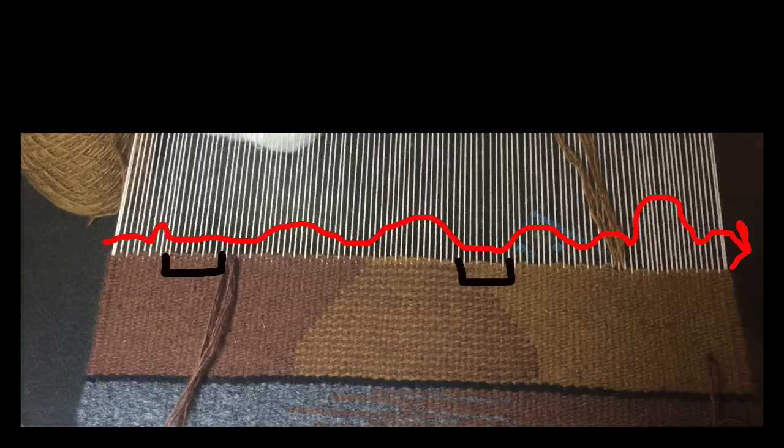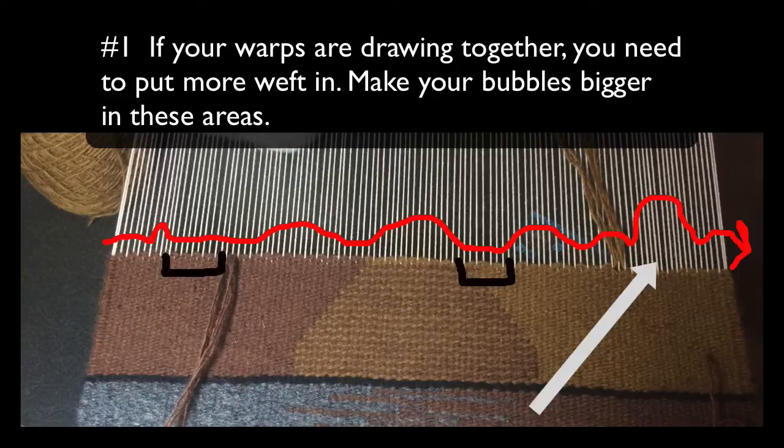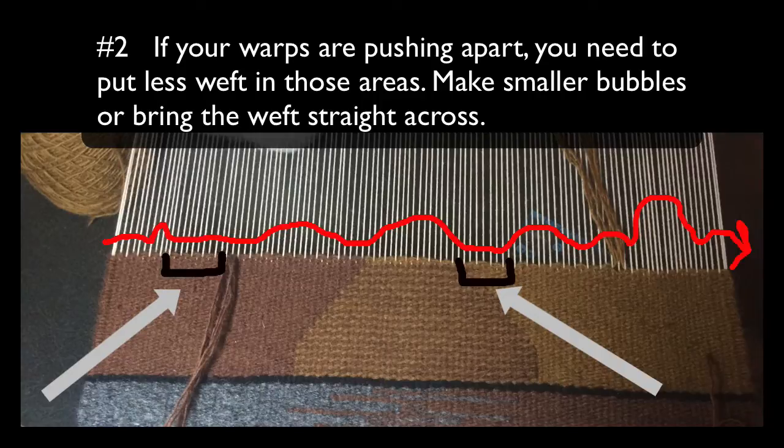The basic points to remember are, if your warps are drawing together, you have to put more weft in. Make bigger bubbles in those areas. And if your warps are pushing apart, you need to put less weft in there. Make smaller bubbles or bring the weft straight across in those areas.